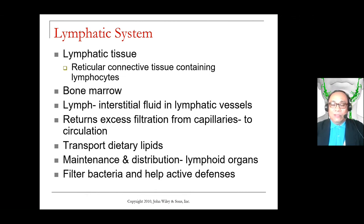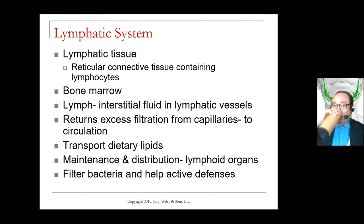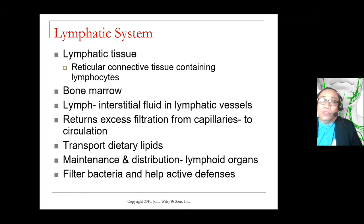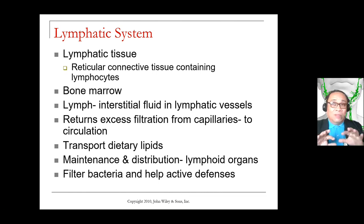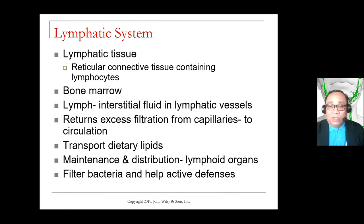To understand the lymphatic system, we have to study first the components — the tissues and organs involved. The lymphatic system is rich with lymphatic tissues, meaning aside from the organs themselves, there are tissues that cluster together to perform a specific function. Since they form together but not really forming an organ, they are referred to as lymphatic tissues, and their composition is predominantly reticular connective tissue that contains a huge population of lymphocytes.